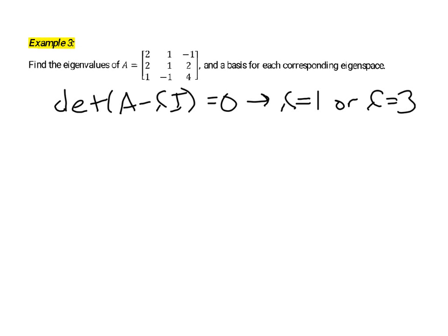In the previous video, I showed you how you could take the characteristic equation, which you get from taking the determinant of this A minus lambda I matrix, setting it equal to 0. We found the eigenvalues lambda equals 1 or lambda equals 3.